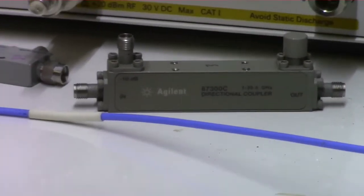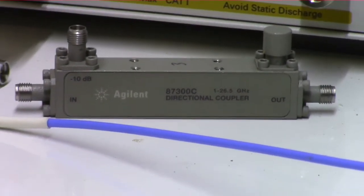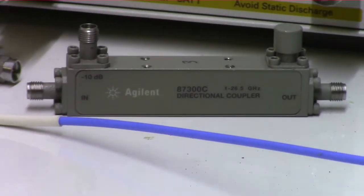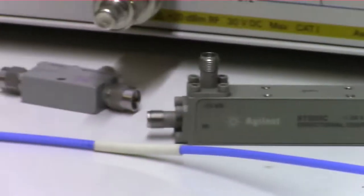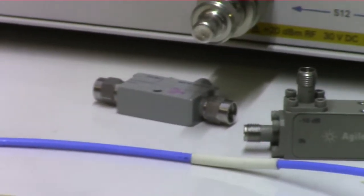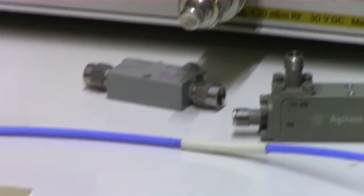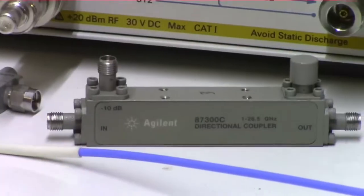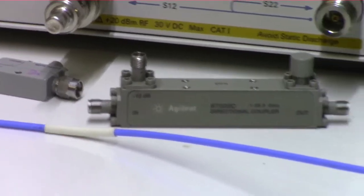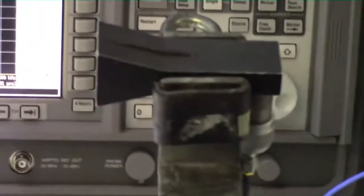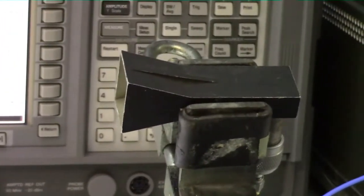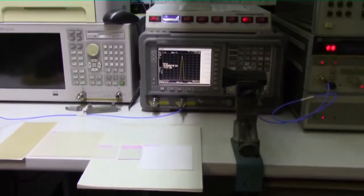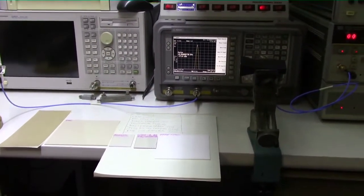We're going to put the plastic on, get a reading, take the plastic off, get another reading. The difference between them will give us a rough idea of the insertion loss. Also what we're going to do after we get an idea of the insertion loss, we're going to measure the return loss of the transmit antenna using a Narda directional coupler. This is the 87300C, it's rated from 1 to 26 gig, it's a 10 dB directional coupler.